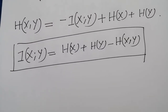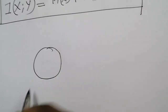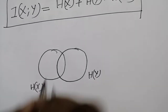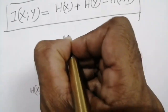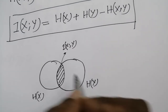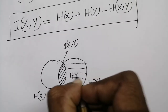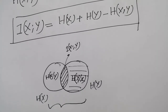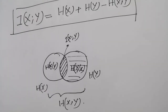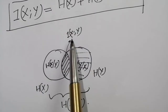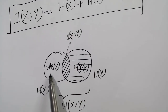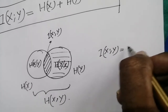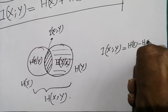Graphically, let h(x) and h(y) be represented by two overlapping regions. The overlapping region is I(x;y). The part of h(x) not overlapping is h(x|y), and the part of h(y) not overlapping is h(y|x). Together they form h(x,y). From this figure it is clear that I(x;y) = h(x) - h(x|y) = h(y) - h(y|x).